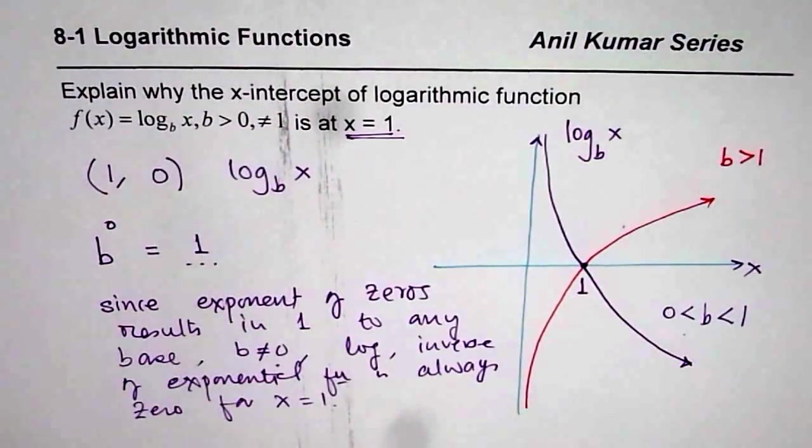Exponent, if it is 0, then the value of the function is always 1. So, the inverse will give you (1, 0), which is the logarithmic value. So, that is how it is related. Thank you, and all the best.